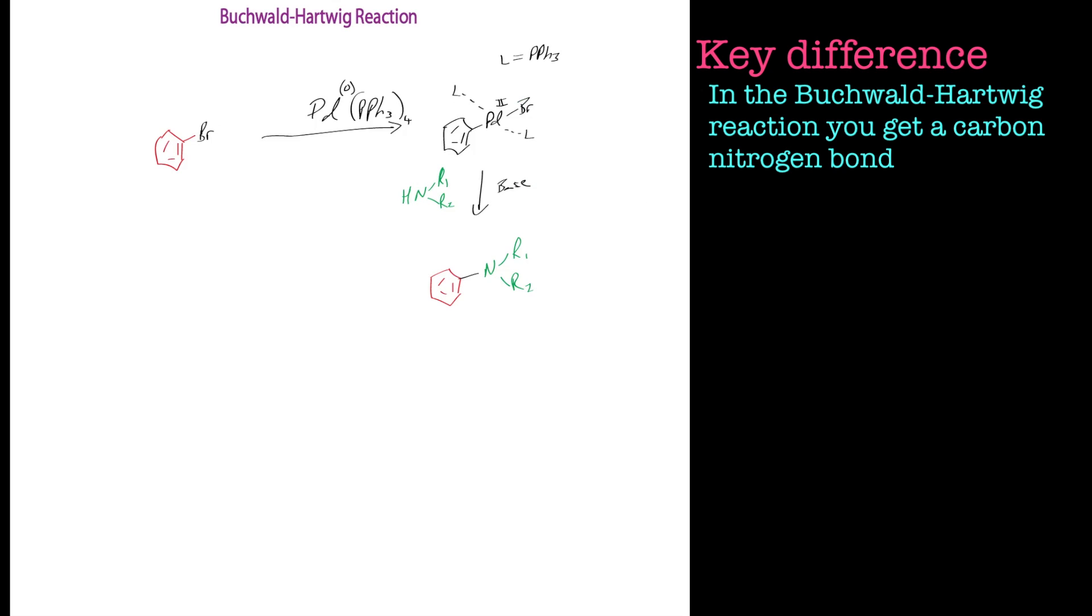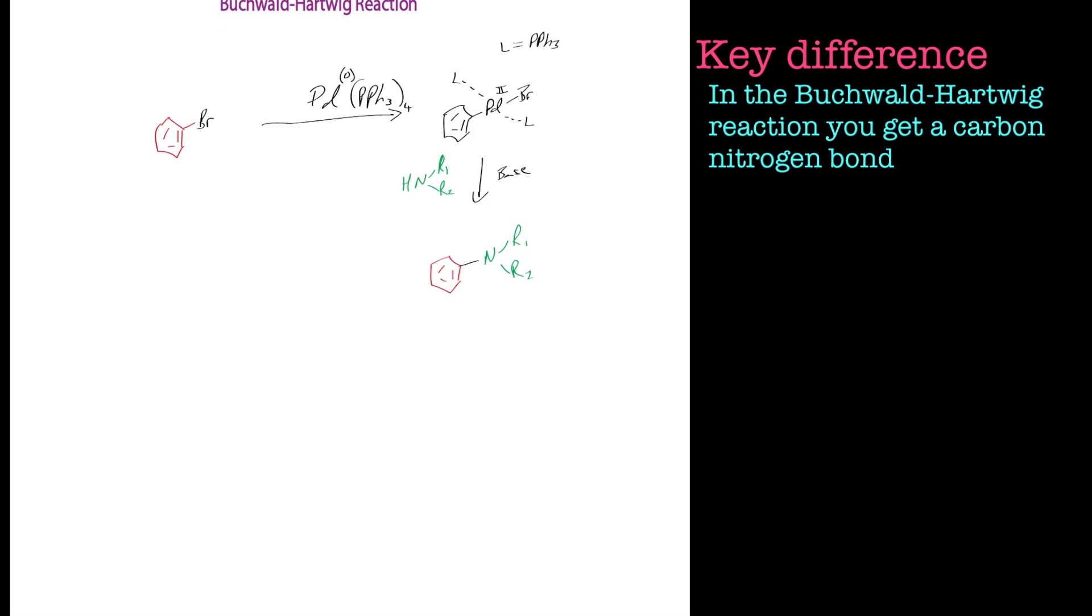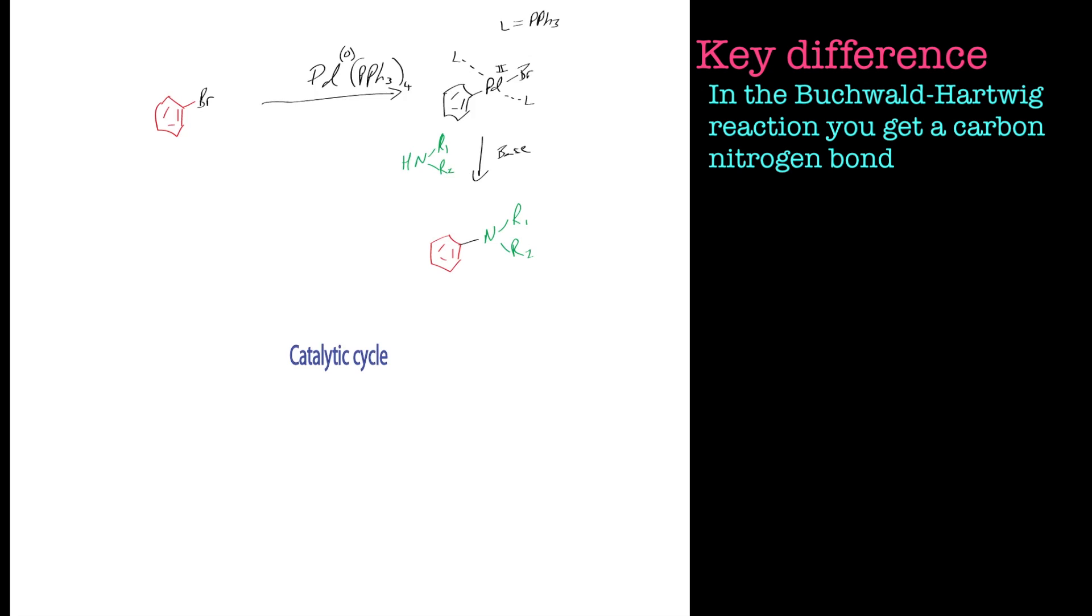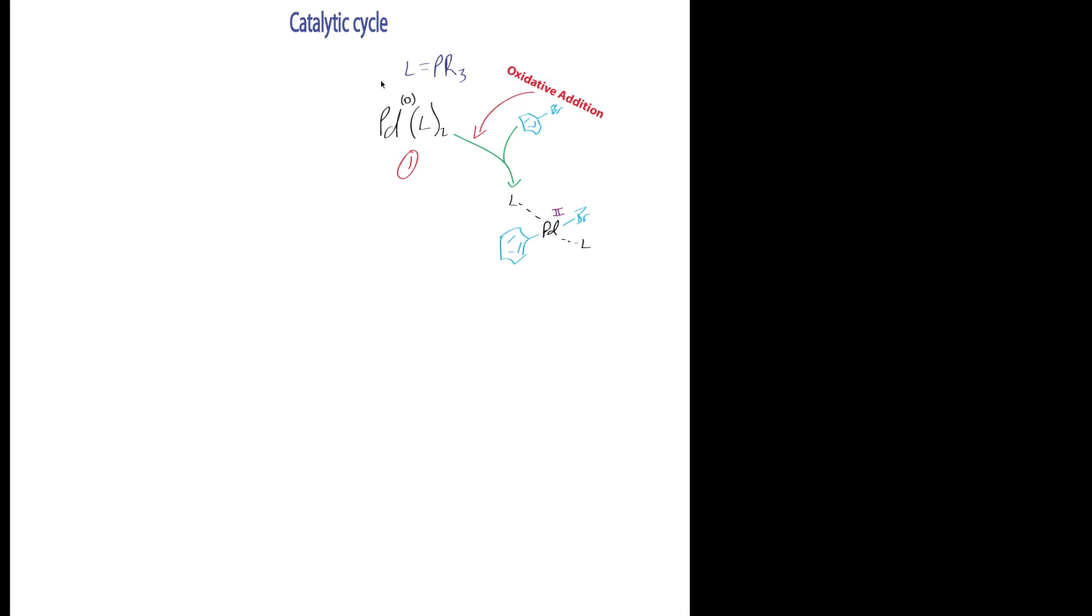Without further ado, we'll move straight into the catalytic cycle. I'll just move this down a bit and bring the catalytic cycle up. So the first thing, as ever, is we've got a palladium zero species. Normally we'll talk about the ligands later, but the ligands are phosphine ligands. We'll initially lose two of those ligands just to create a vacant site for things to coordinate to, so coordination sites appear.